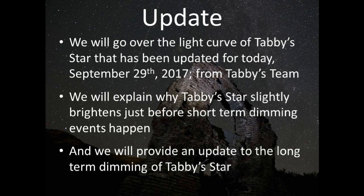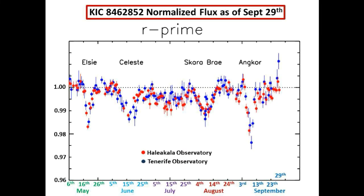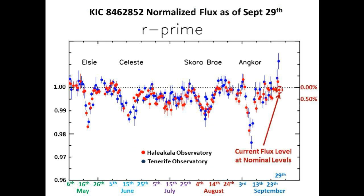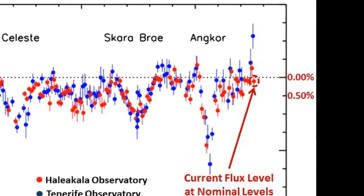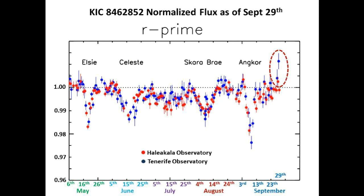We will also provide you with an update to the long-term dimming of Tabby Star. This is the current normalized light curve of Tabby Star taken in the R-band with multiple telescopes at two locations on opposite sides of the Earth. Circled in red is the latest flux level — it looks like we are at the nominal flux level for Tabby Star. The weather at both observatories has been really bad, and the three data points circled in red prior to the current one are all riding too high, so those data points will probably be thrown out later on.